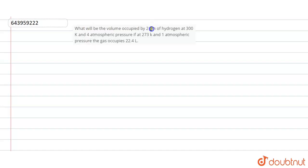So what will be the volume occupied by 2 gram of hydrogen at 300 Kelvin and 4 atmospheric pressure, if at 273 Kelvin and 1 atm atmospheric pressure the gas occupies 22.4 liter? So we have to find the volume occupied by this given gas.